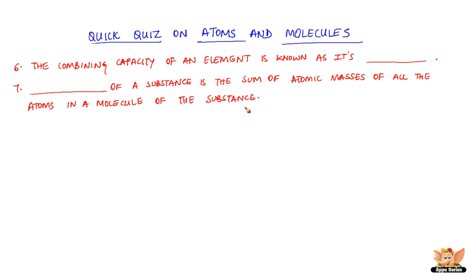Dash is the sum of the atomic masses of all the atoms in a molecule of the substance. Dash of a substance is the sum of the atomic masses of all the atoms in a formula unit of an ionic compound.